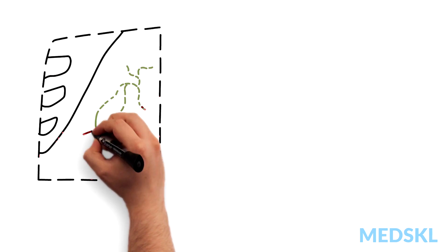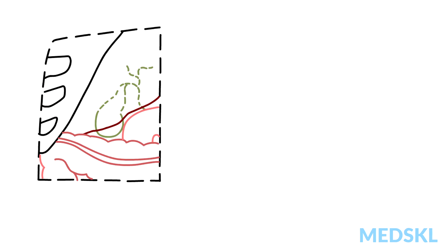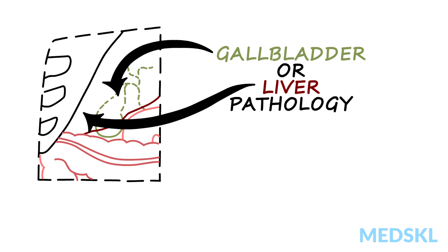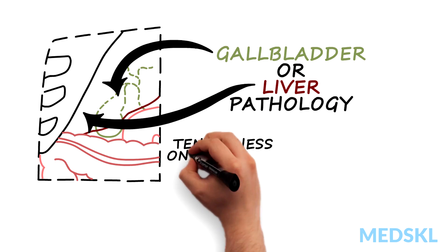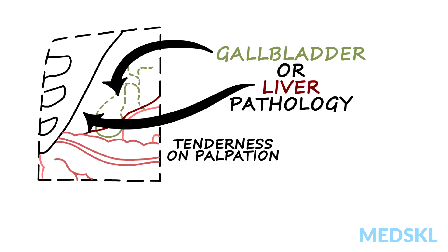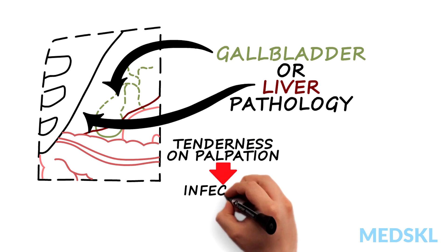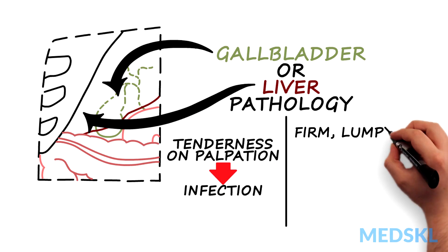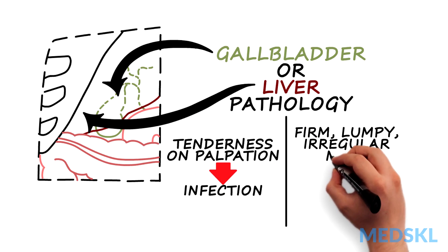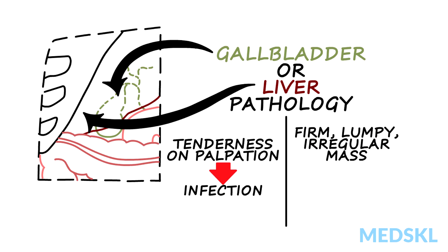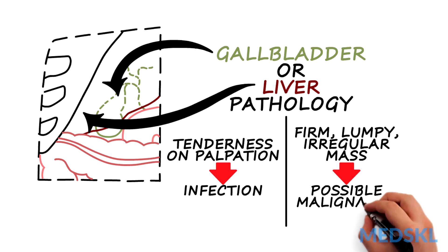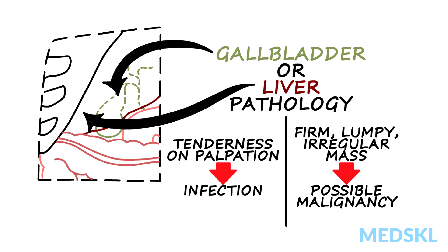A mass in the right upper quadrant can represent gallbladder or liver pathology. Tenderness on palpation usually indicates an infectious process of either organ. Firm, lumpy, or irregular masses can suggest more serious pathology, such as cancer, and should be investigated immediately.